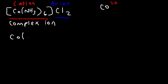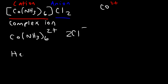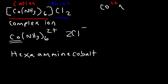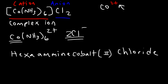The complex ion is Co(NH3)6 with a 2+ charge, and the anions are chloride. To name the cation, we have six ammonia molecules — six is hexa, and the ligand ammonia is called amine, spelled with two M's. So it's hexaammine, then the transition metal cobalt, then the oxidation state two. The name of the complex ion is hexaamminecobalt(II). The anion uses the -ide ending: chloride. So the full name is hexaamminecobalt(II) chloride.